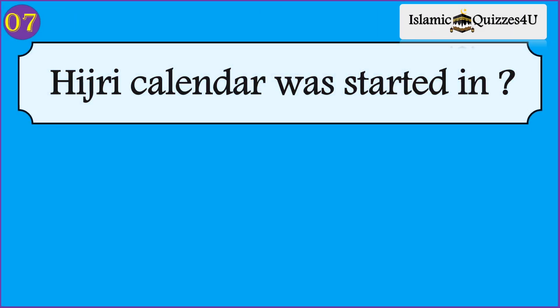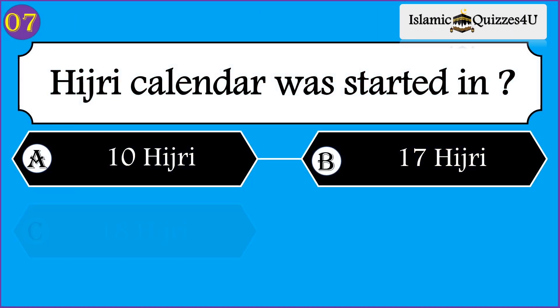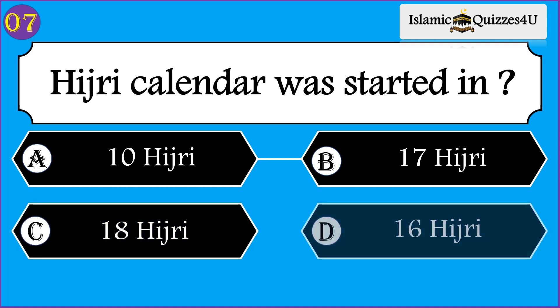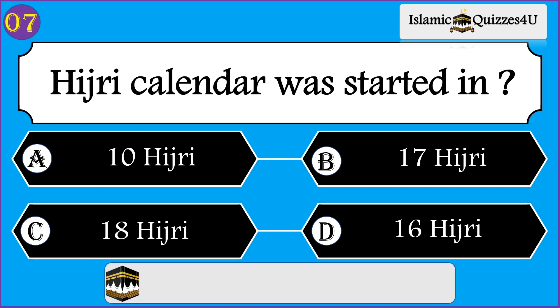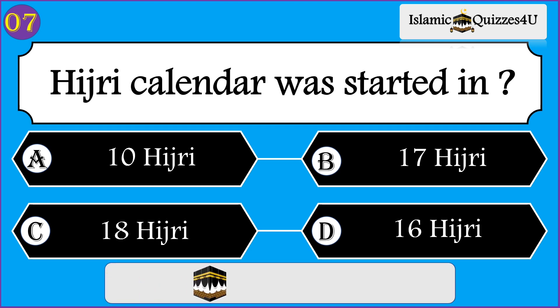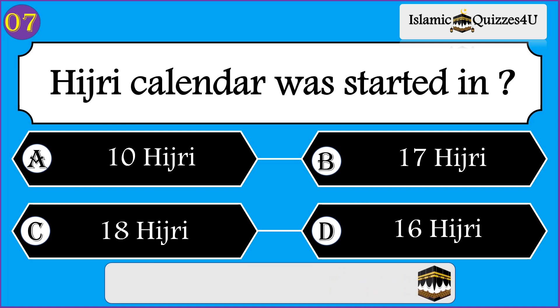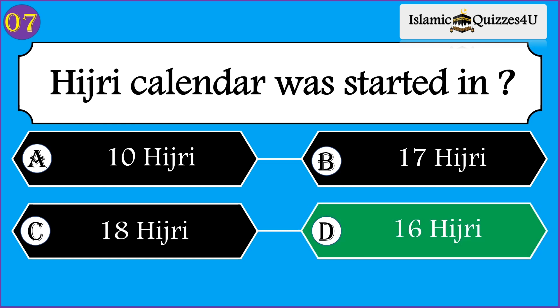Question number seven: The Hijri calendar was started in — Option A: 10 Hijri. Option B: 17 Hijri. Option C: 18 Hijri. Option D: 16 Hijri. Correct option is 16 Hijri.